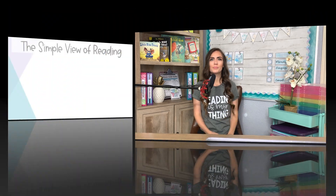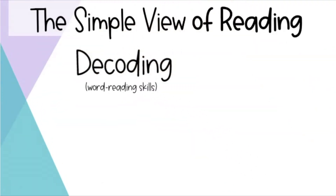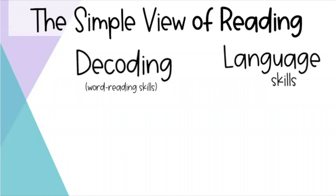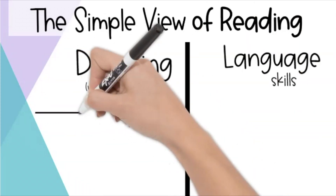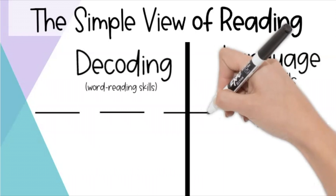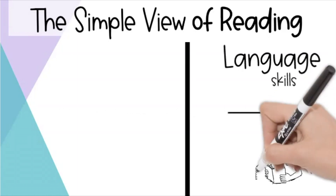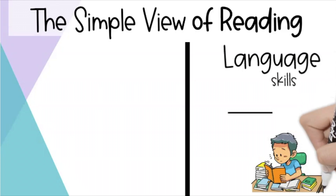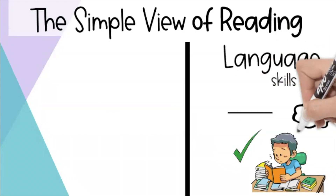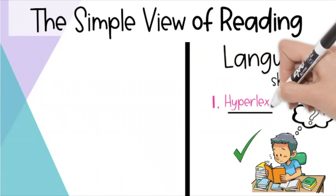Both decoding and language comprehension are essential for reading. The Simple View of Reading gives us two possible sources for the root of reading problems: decoding and word reading problems, or language comprehension. We can further break this down into four different types of struggling readers. The first one is purely concerning language comprehension. Students who can decode perfectly and read a passage beautifully but then have no idea what they just read are what we call hyperlexic. These students are a bit more rare, but they are still out there.